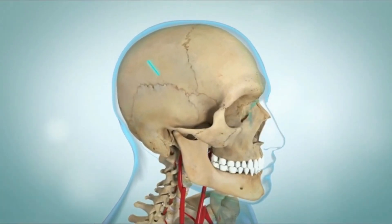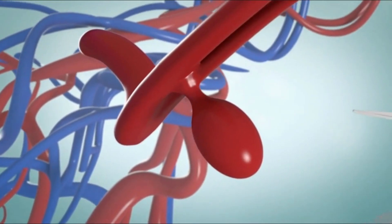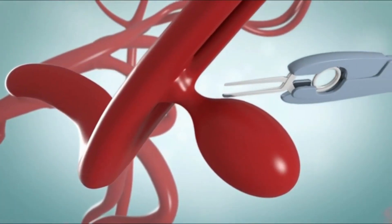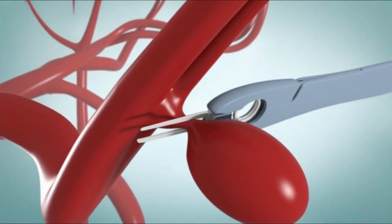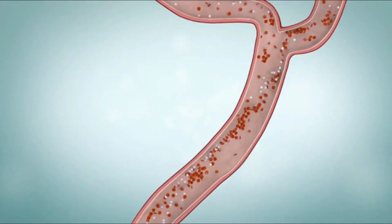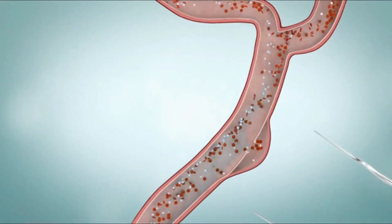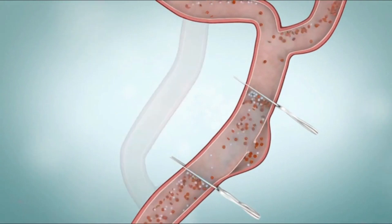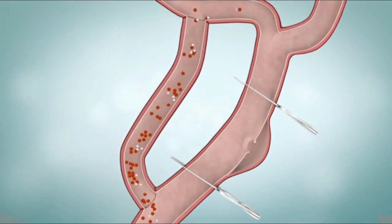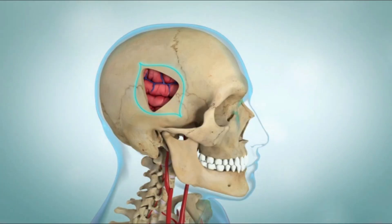During surgical repair, a section of your skull is taken out so the surgeon can get to the aneurysm. If the aneurysm is on a stem, the surgeon may perform surgical clipping — placing a small metal clip around the stem to keep blood from flowing into the aneurysm. If the aneurysm is not on a stem, a procedure called occlusion might be used, where the healthcare provider clamps the entire artery that supplies it, keeping blood from flowing into the aneurysm, and a bypass is created for blood to flow around it. Once the surgical repair is complete, the surgeon replaces the section of your skull.